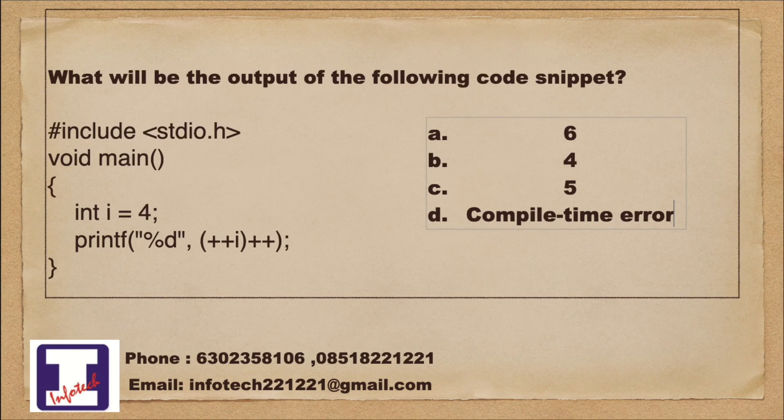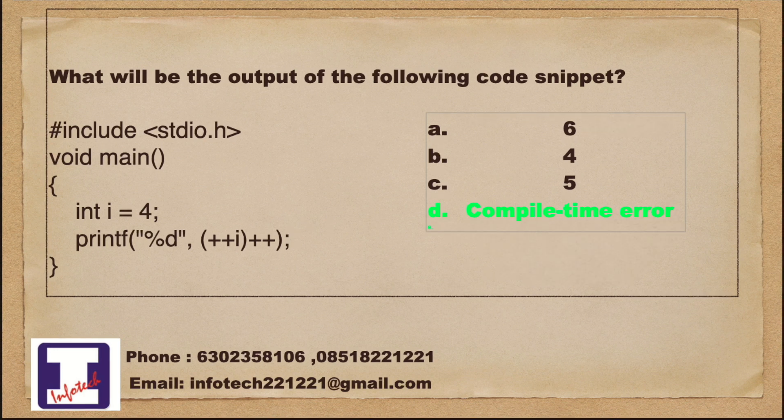What will be the output of the following code snippet? a. 6, b. 4, c. 5, d. Compile time error. And the answer is d, Compile time error.